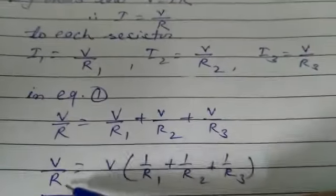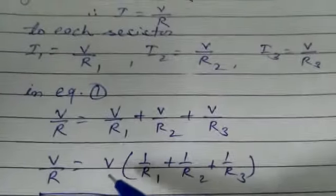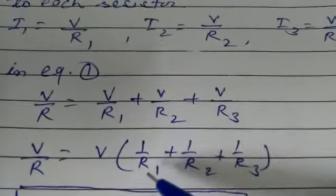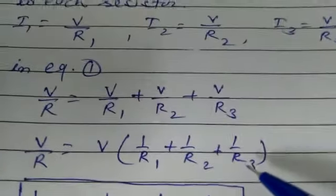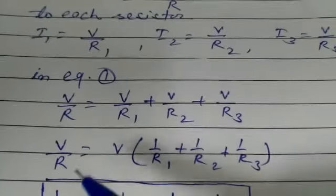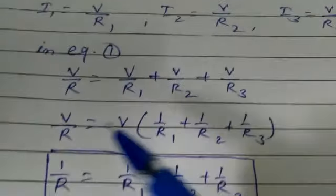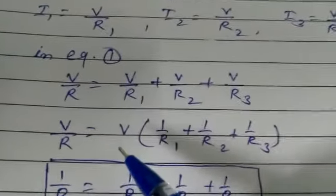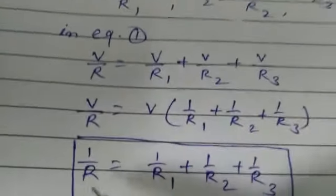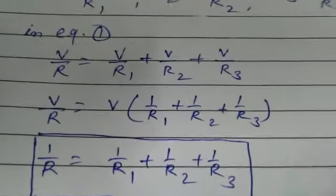Left hand side same remains. Right hand side we can take V common. So when you take V common, you get 1 upon R1, 1 upon R2, and 1 upon R3. So V upon R equal to V times 1 upon R1 plus 1 upon R2 plus 1 upon R3. When you do cross multiplication, V and V will cancel. So we get 1 upon R equal to 1 upon R1 plus 1 upon R2 plus 1 upon R3.